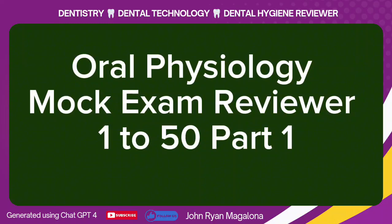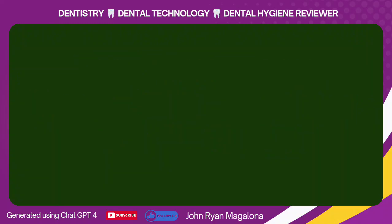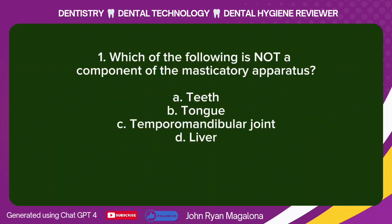Question 1: Which of the following is NOT a component of the masticatory apparatus? A. Teeth. B. Tongue. C. Temporomandibular Joint. D. Liver. Answer: D. Liver.